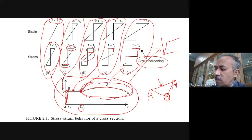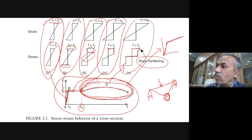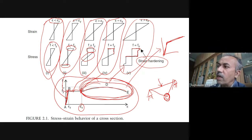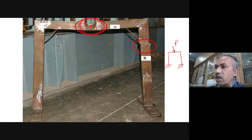One most important assumption in our plastic analysis is we ignore strain hardening. This portion we have ignored. Whatever plastic analysis you do, you are conservative because you have not included the strain hardening also.